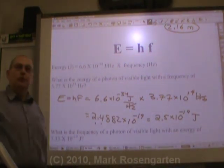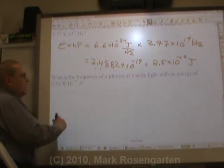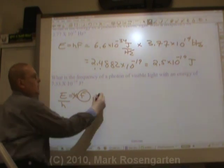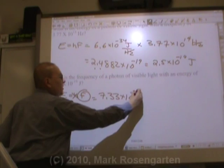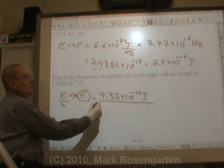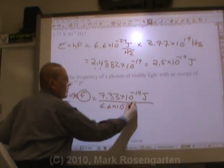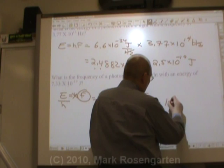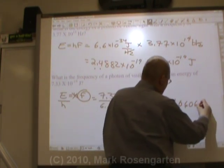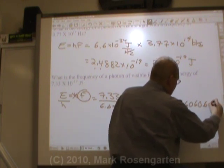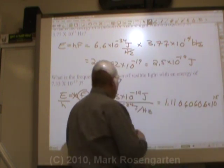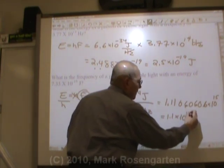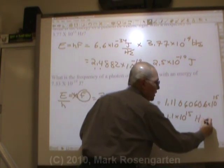What is the frequency of a photon? E equals h times f. Divide both sides by h. The energy is 7.33 times 10 to the negative 19th joules, divided by Planck's constant, 6.6 times 10 to the negative 34th joules per hertz. This comes out to 1.11 times 10 to the 15th. Rounded to 2 significant figures: 1.1 times 10 to the 15th hertz, because joules cancel out, leaving the unit for frequency.